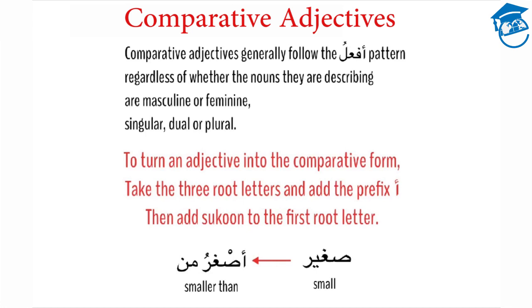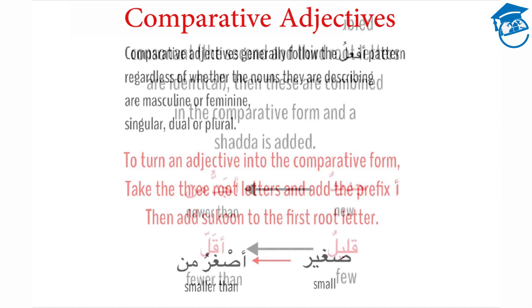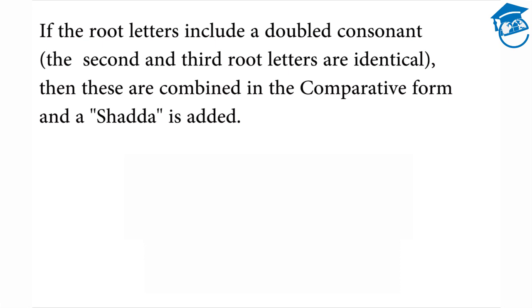For example, sarir means small. To change it into the comparative form, we add aleph with hamza at the beginning, giving us the three root letters sod, rein, and ra. We put sukun over the first root letter sod, add one vowel marker at the end because it's a diptote, and then add min to make it comparative. If the root letters include a double consonant—where the second and third root letters are identical—these are combined in the comparative form and a shedda is added.